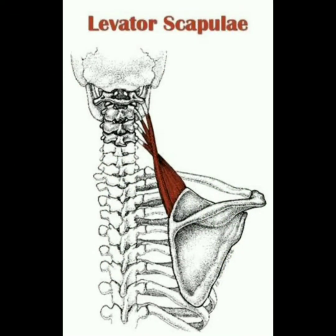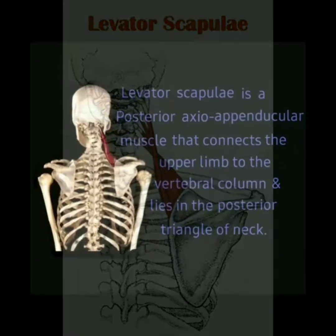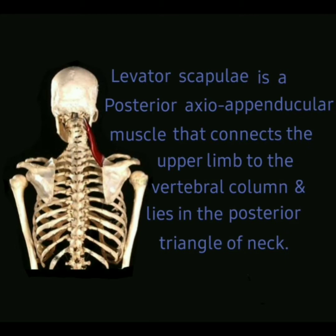Assalamualaikum, welcome to my new video. In this video I will discuss the anatomy of the levator scapulae muscle. The levator scapulae muscle is a posterior exo-appendicular muscle that connects the upper limb to the vertebral column and lies in the posterior triangle of the neck.